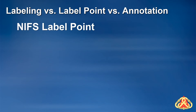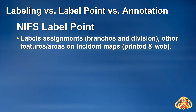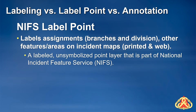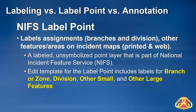The National Incident Feature Service, or NIFS, label point feature class is used primarily to label assignments like division branches on incident maps. Because the label point feature class is part of the NIFS, label points will appear in both ArcGIS Pro map layouts that include the label point features and web maps that contain the National Incident Feature Service. The label point is an unsymbolized point feature that is labeled dynamically with four unique feature classes: branch or zone, division, other small, and other large.